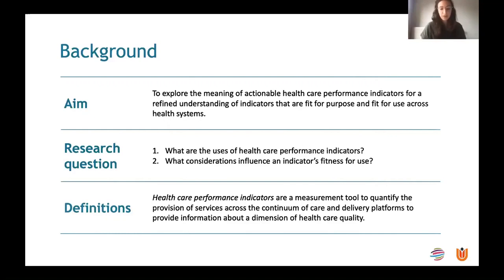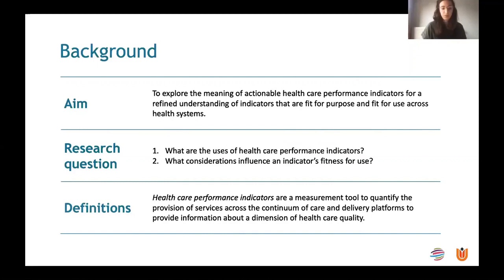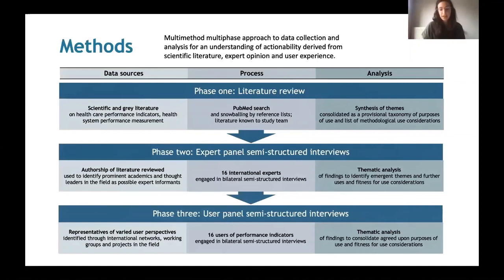In terms of key definitions: for healthcare, we were broad in covering the provision of services across the continuum of care and across delivery platforms from primary to acute to specialist and long-term care. A performance indicator refers to a measurement tool to provide information about a dimension of quality. In terms of methods, we adopted a multi-method, three-phased approach to collect and analyze data, building upon the scientific literature, expert opinion, and user experience. We began with a search of the literature to examine the scientific evidence base and generate an initial list of fit-for-purpose and fit-for-use considerations, and also to identify leading experts in the field. This synthesis informed a provisional taxonomy for consideration in the next phase.